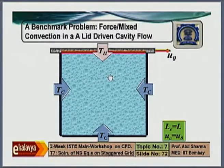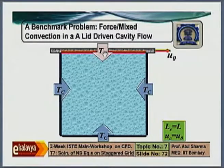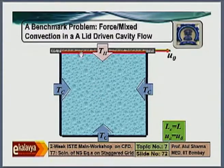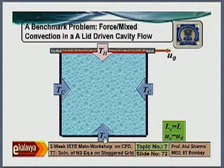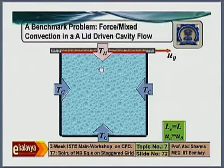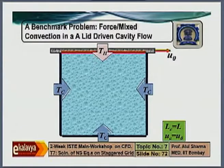If the Grashof number is positive, the top plate is hot compared to the bottom plate and the hot fluid remains close to the top wall. When it becomes negative, the buoyancy-induced flow is upward, so there is more vigorous flow circulation when it is negative compared to when it is positive. In summary, when the Grashof number changes sign, the direction of the buoyancy force changes.